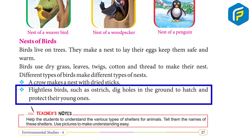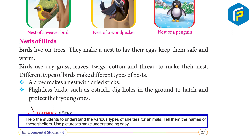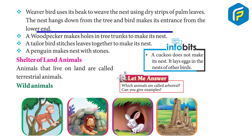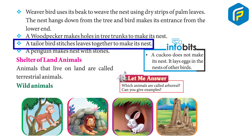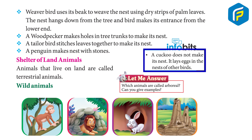Flightless birds such as ostriches dig holes in the ground to hatch and protect their young ones. Weaver birds use their beak to weave the nest using dry strips of palm leaves. The nest hangs down from the tree and the bird makes its entrance from the lower end. A woodpecker makes holes in tree trunks to make its nest. A tailor bird stitches leaves together to make its nest. A penguin makes a nest with stones. A cuckoo does not make its nest — it lays eggs in the nests of other birds.